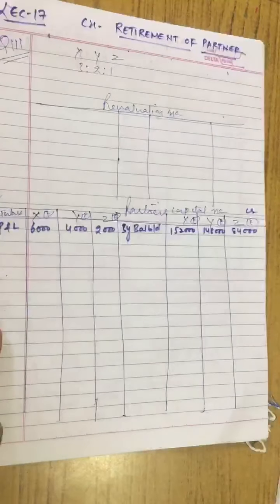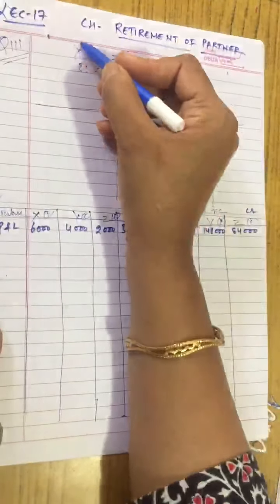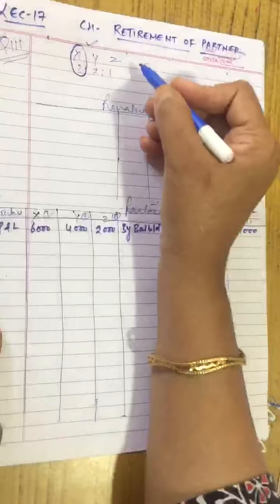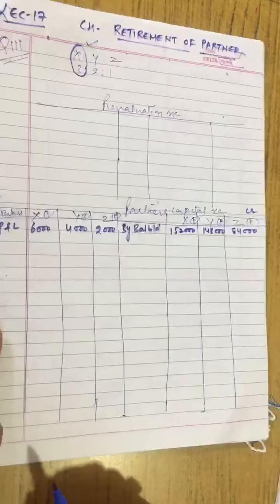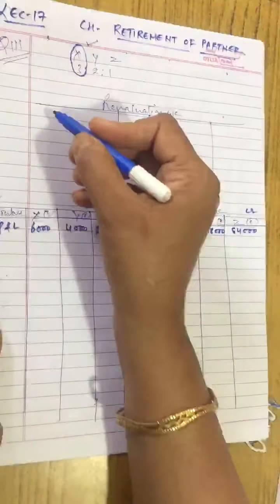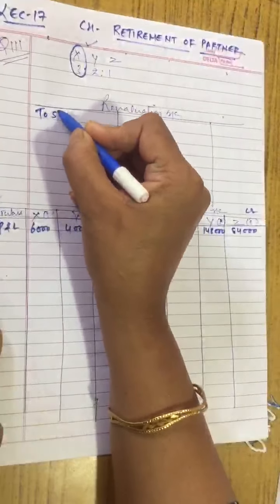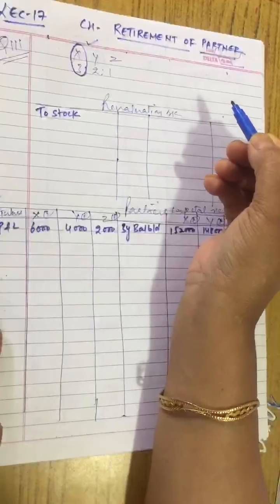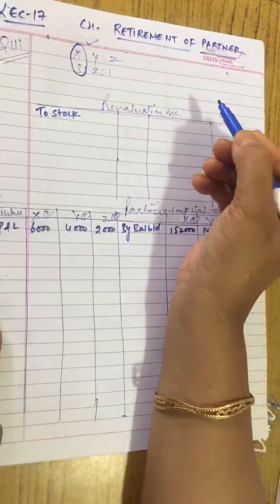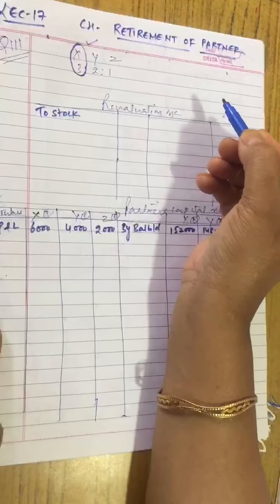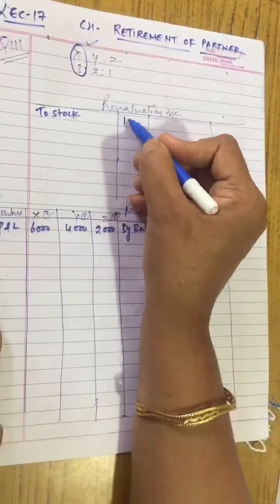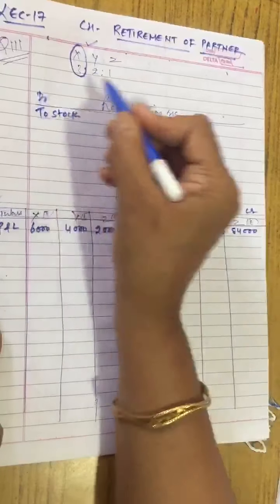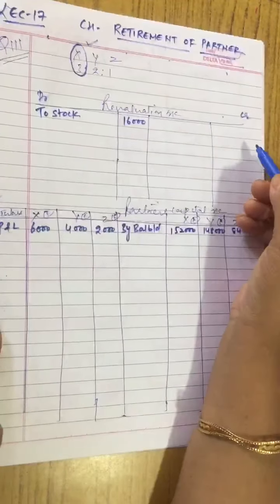After this, the question says X retired on that day. X is retiring, so I will circle it. X's share is 3/6. Stock is to be depreciated by 40%. Your stock is reducing by 40%. If you look at the stock, it is 40,000; 40% of 40,000 is 16,000 — so it has decreased by 16,000, so it's a loss.